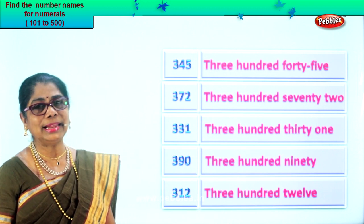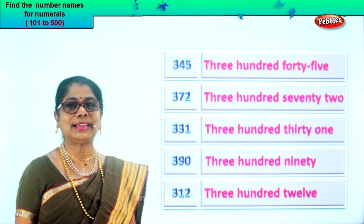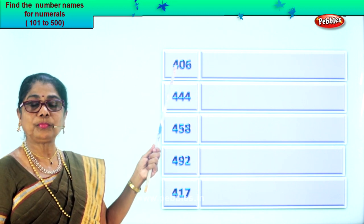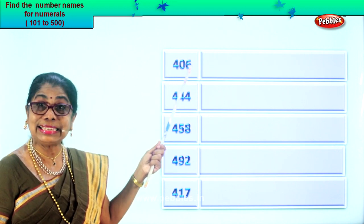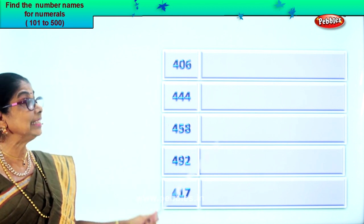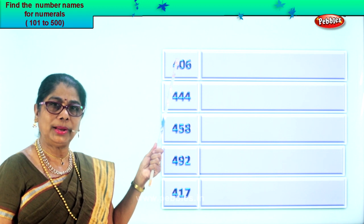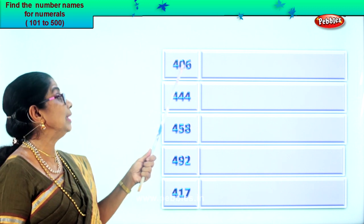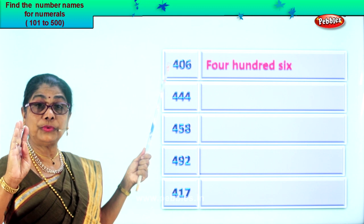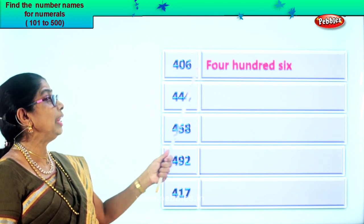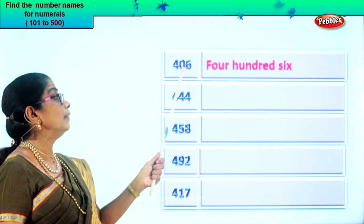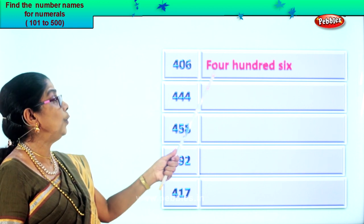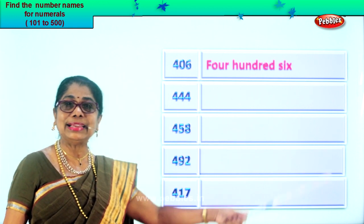Did you enjoy the exercise? Let's go on to another short exercise. Look at the numeral given to you. First: four, zero, six — six in the ones place, zero in the tens, and four in the hundreds place. How will we read this? Four hundred six, because there's nothing in the tens place. First you write the spelling of four, then you write the spelling of hundred. You do not have anything in the tens place, but you have six — simply write six. Four hundred six.